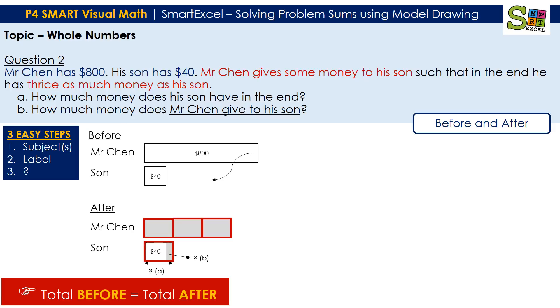So do take note, maybe you can highlight to our kids that when it comes to before and after model in terms of transfer, there is no losses, there is no giving away, there is no throwing away. So the total for the before and after model will be equal.